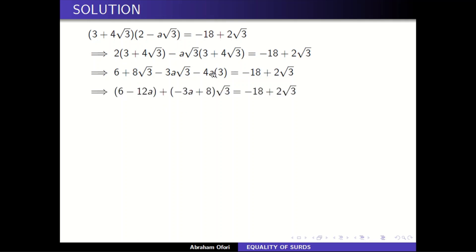Then you have to group like terms — group the rational numbers on one side and group the surd terms. It's like factoring the square root out. You are left with negative three a plus eight in front of square root of three. The rational part is six minus twelve a, wait — you group: rational part and the surd part. So if I expand this I'll get this back.